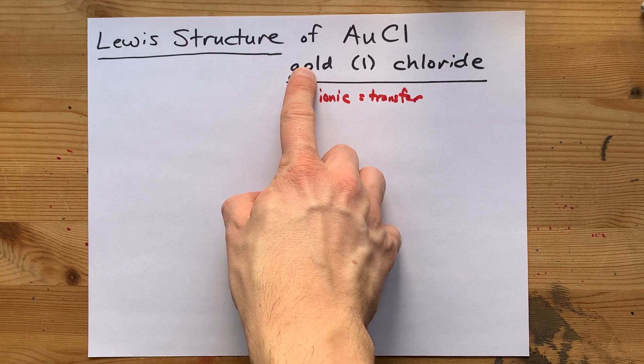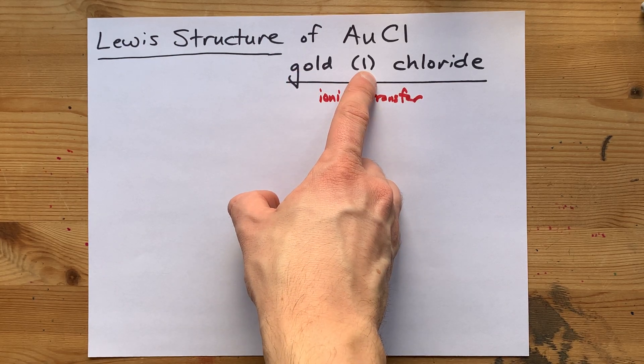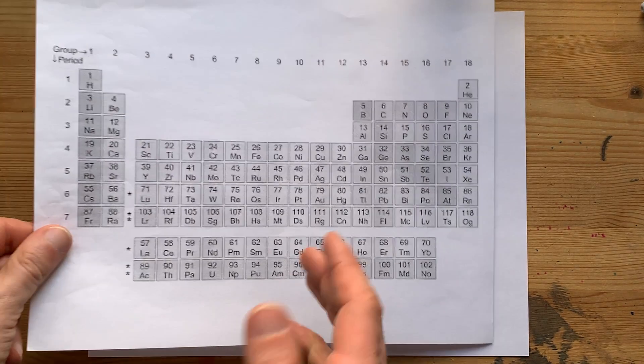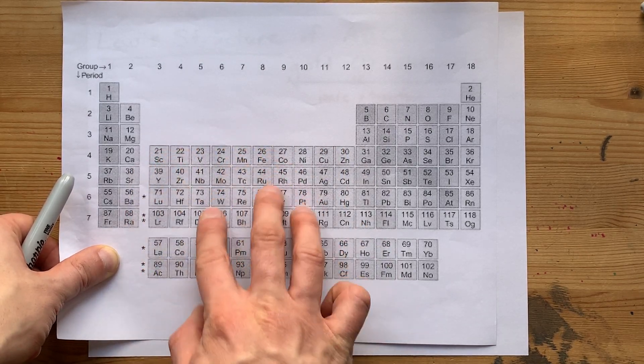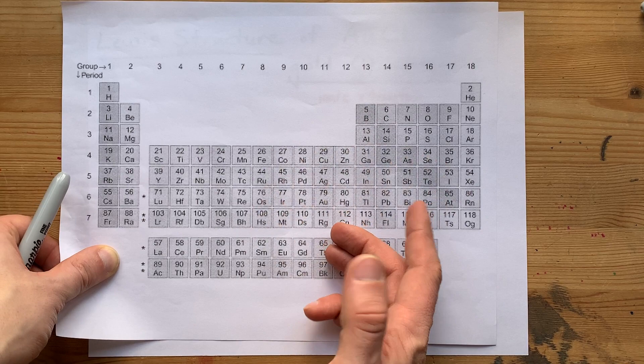What's the charge on gold? According to this, it's a charge of plus one. Here in the transition metal block, most of these atoms can have more than one possible charge.